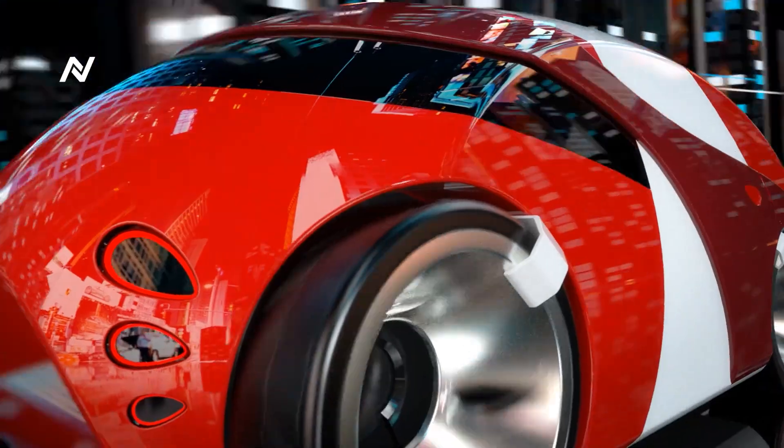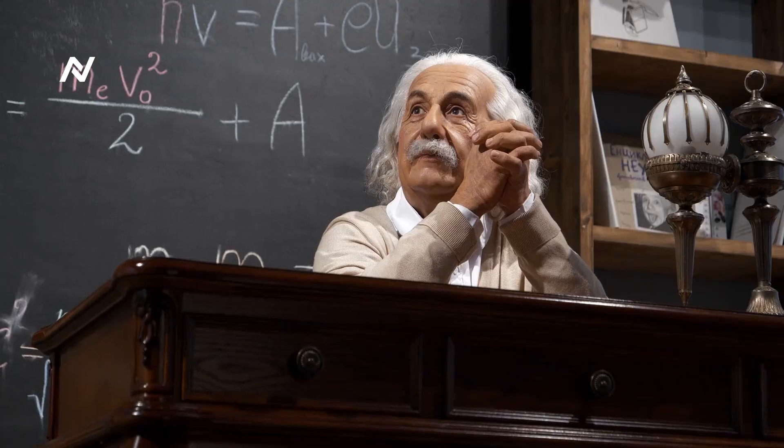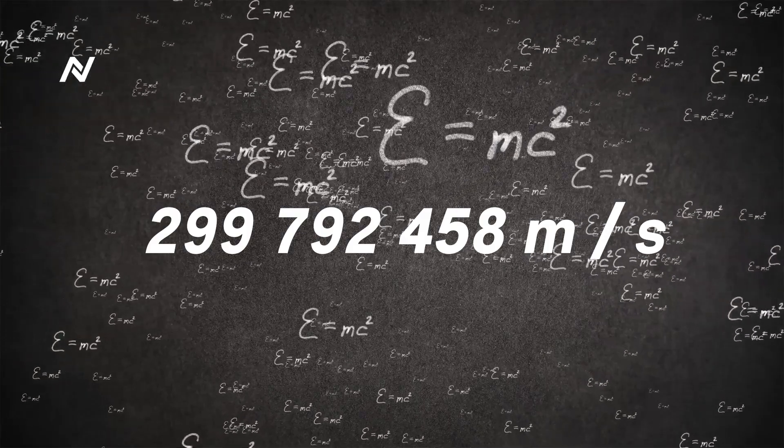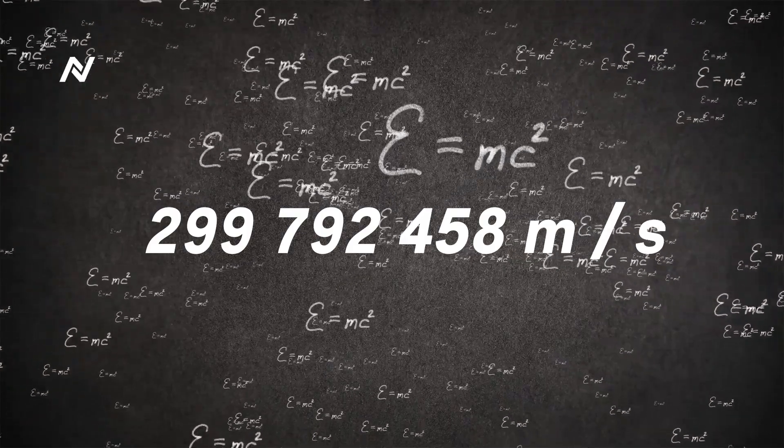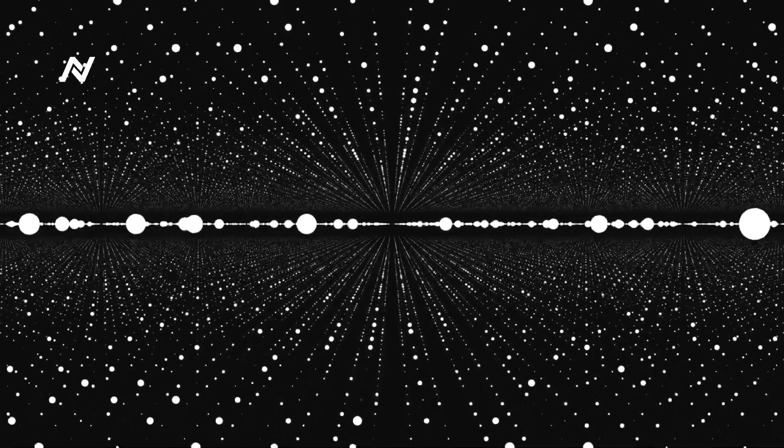Could humanity one day travel faster than the speed of light? For over a century, this idea has seemed impossible. According to Einstein's theory of relativity, the speed of light, about 299,792 kilometers per second, is the ultimate speed limit in the universe.